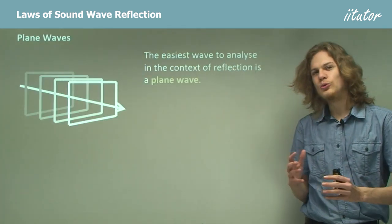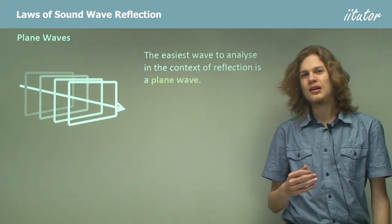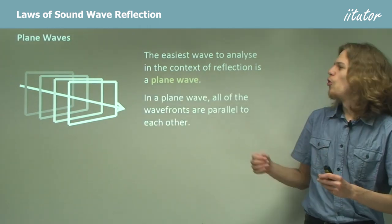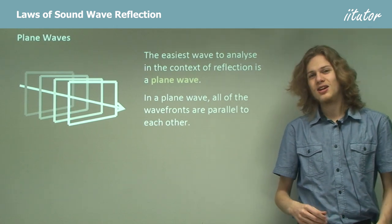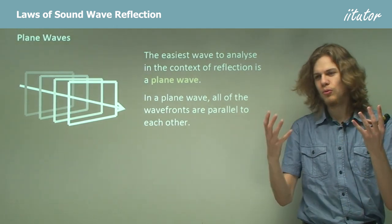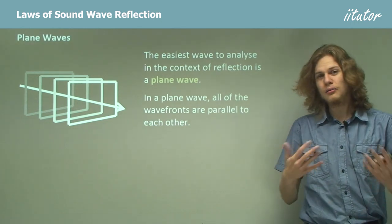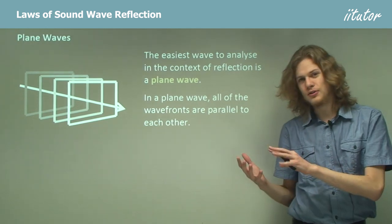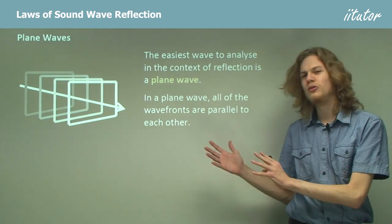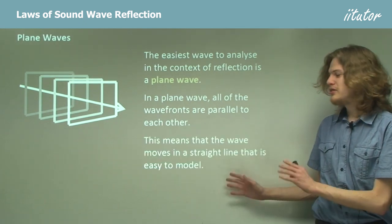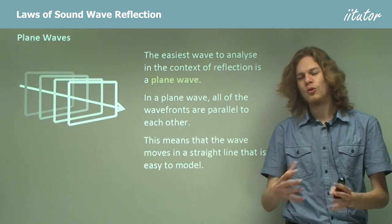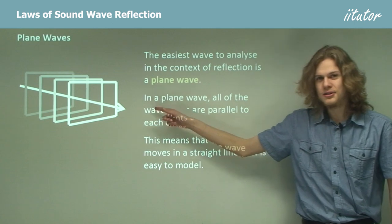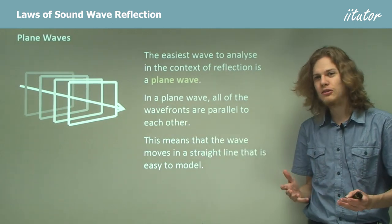It's easiest to analyse reflections of waves if we treat them as plane waves. In a plane wave, all the wave fronts are parallel — instead of having curved wave fronts spreading out from a single point, we have flat wave fronts like planes. In mathematics or science, a plane is a long flat surface that extends for a very long distance, you might even say infinity. This means we can draw an arrow through all these planes to get a straight-line representation of what the wave looks like.